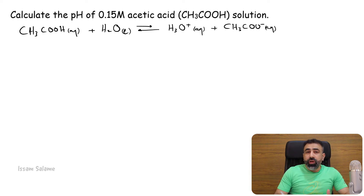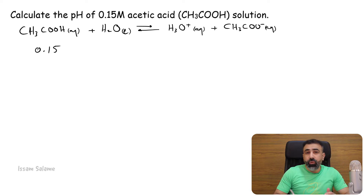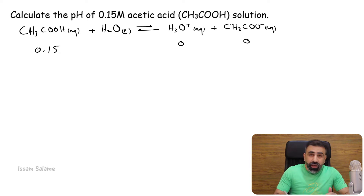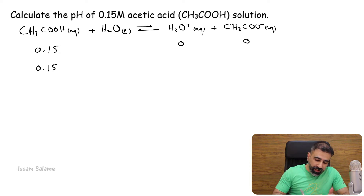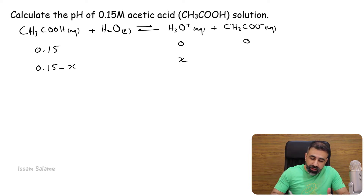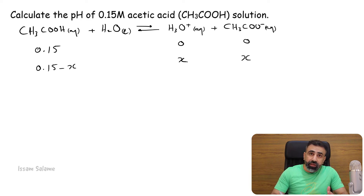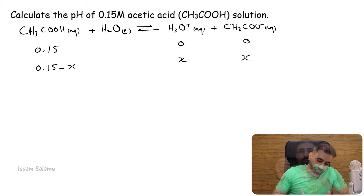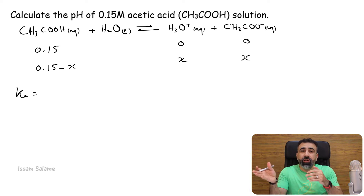At the beginning, we had 0.15 molar of acetic acid, while we had 0 hydronium ions and 0 acetate ions. At equilibrium, the concentration of acetic acid is going to be equal to 0.15 minus x, which is the quantity dissociated. The concentration of hydronium ions is going to be equal to x, and the concentration of acetate ions is going to be equal to x. To use the ionization constant of acetic acid Ka, we write the concentration of the products divided by the concentration of the reactants, excluding liquid and solid substances.